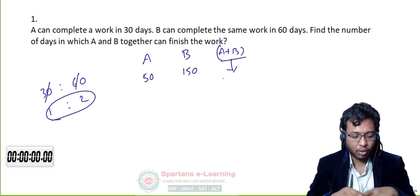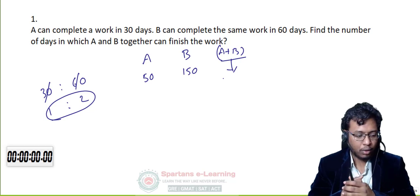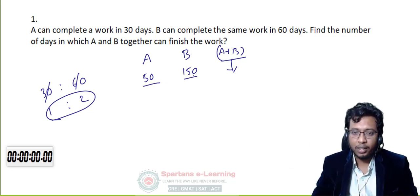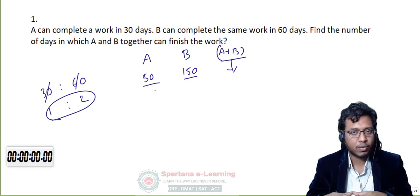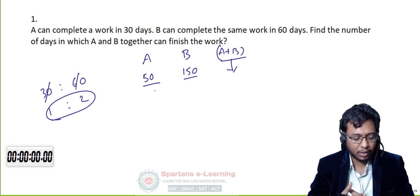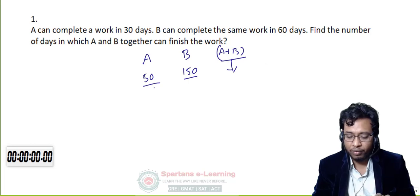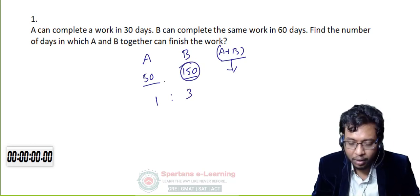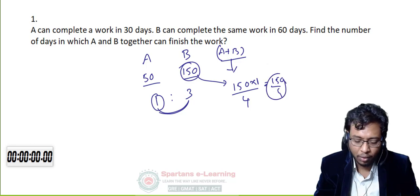To solve 50 and 150 orally: what is the ratio? 1:3. Pick the bigger number — 150. Divide by the sum of ratios (1+3=4), multiplied by the smaller ratio (1). So 150 × 1/4 = 150/4. That is your direct answer.